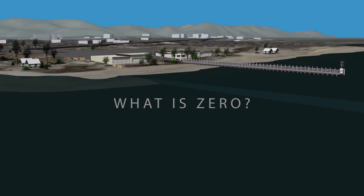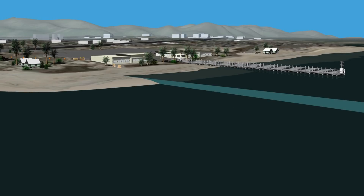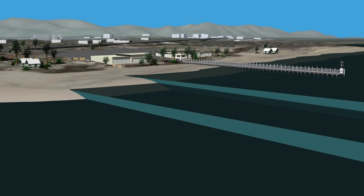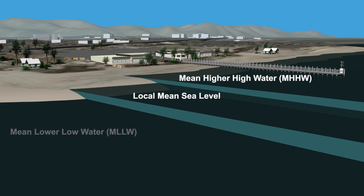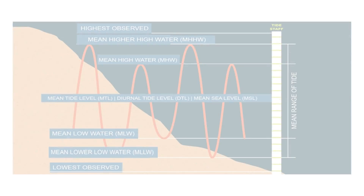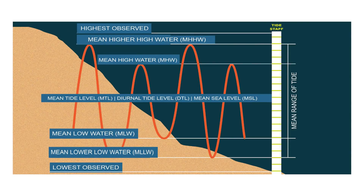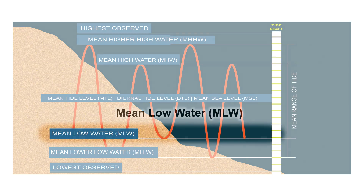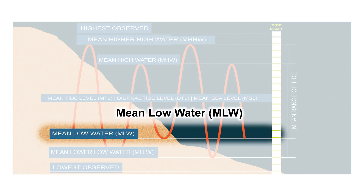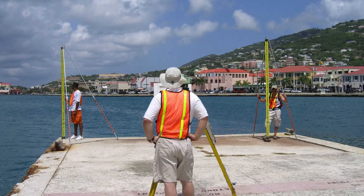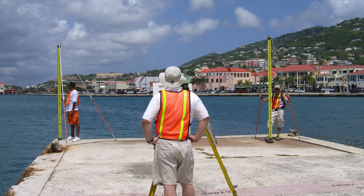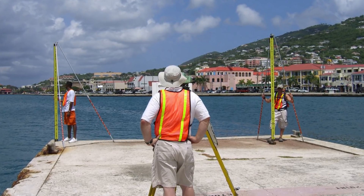NOAA uses NWLON to establish the nation's official vertical reference system for water heights — what we call tidal datums — and the International Great Lakes Datum. A tidal datum is an elevation defined from water level observations during a specific phase of the tide. For example, the average of all low tides forms the mean low water datum. These datums provide a basis, or zero level, for measuring local water heights and depths.